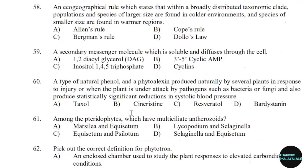58th question: An eco-geographical rule which states that within a broadly distributed taxonomic grade, populations or species of larger size are found in colder environments and species of smaller size are found in warmer regions. Correct answer: Option C — Bergmann's rule.